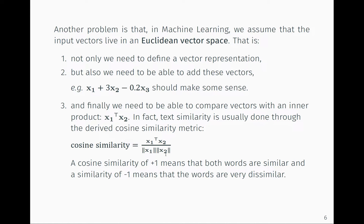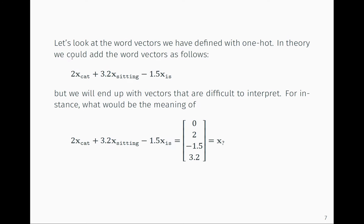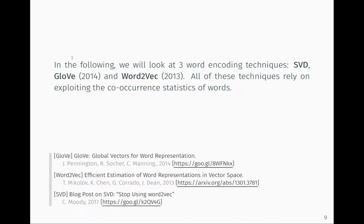With one-hot encoding we're only solving problem one — defining these vectors — but we're not solving the problems of doing linear combinations of words or defining meaningful inner products between them. This brings us to word embedding techniques.